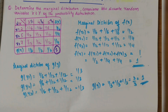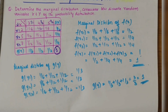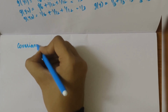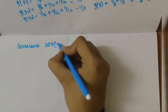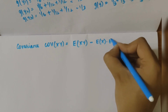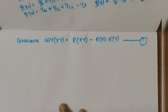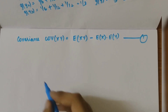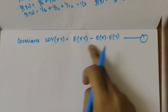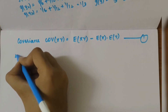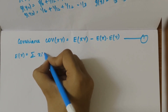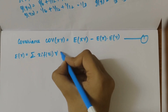Now let's move on to the other part of the question: finding the covariance between x and y. The formula is COV(x, y) = E(xy) − E(x) · E(y). We need to find E(x), E(y), and E(xy) separately, then substitute all values. The formula for E(x) is the summation of x_i · f(x_i) for all values of i.